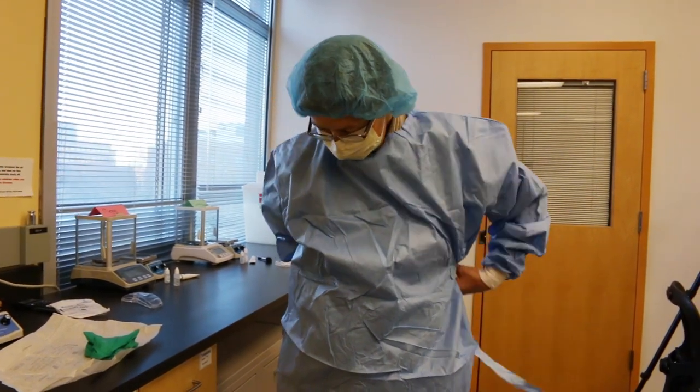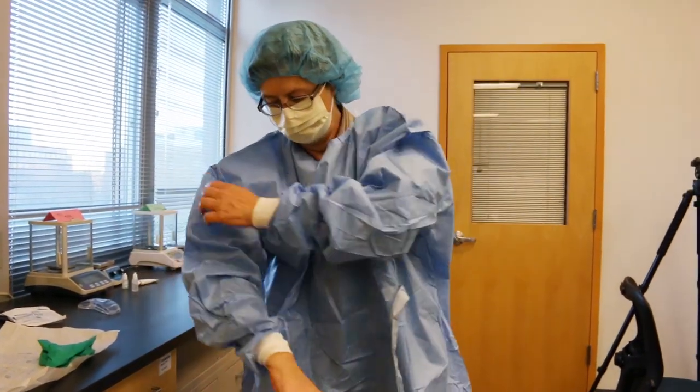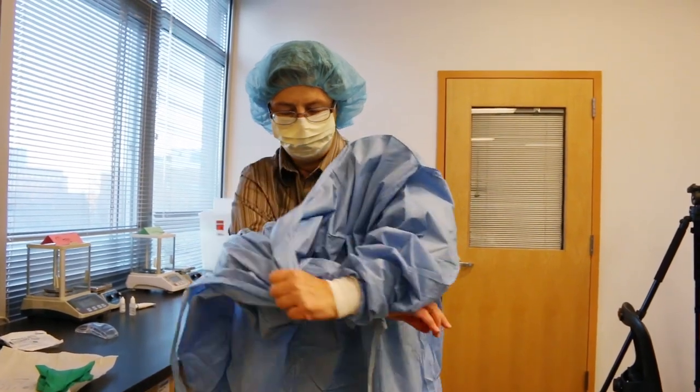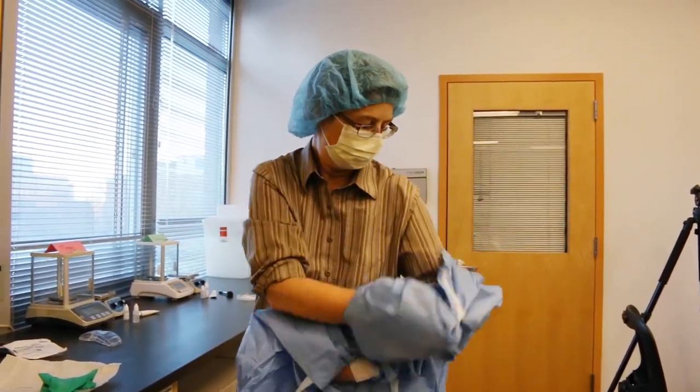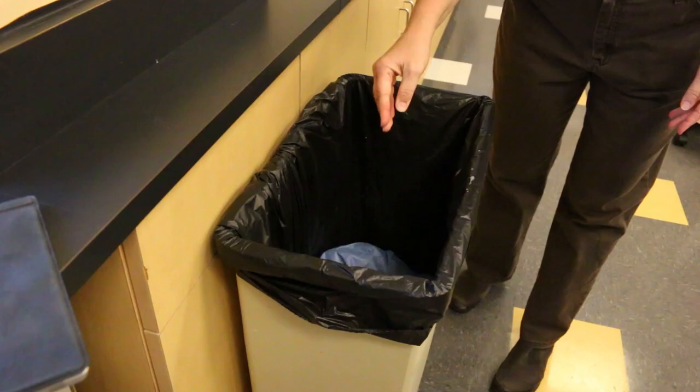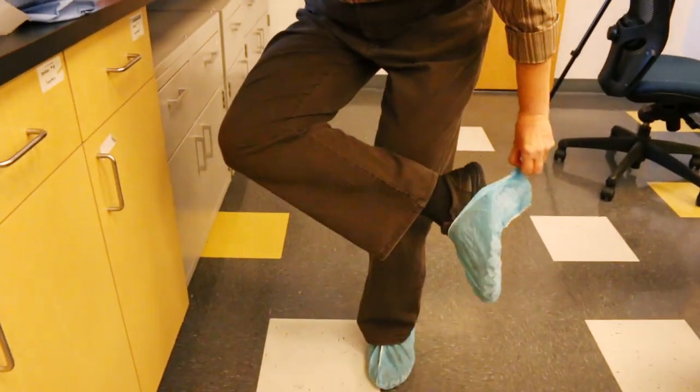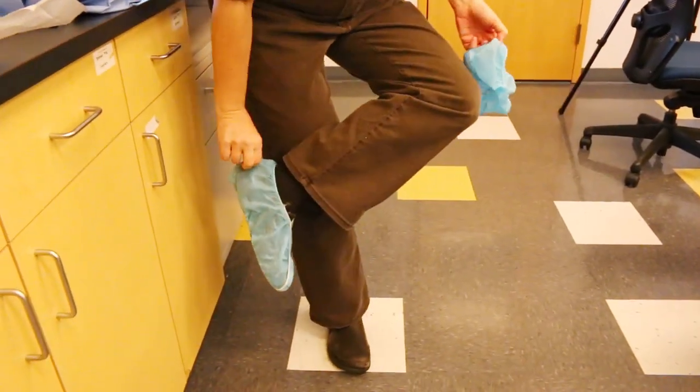Untie the gown and remove it by pulling at the shoulders, turning the gown inside out, and place it in a waste container. Step 27E, remove the face mask, hair cover, and shoe covers, and discard them in the waste container. That is the end of skill 7.